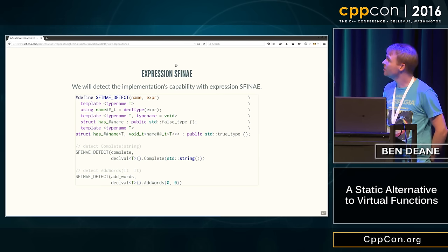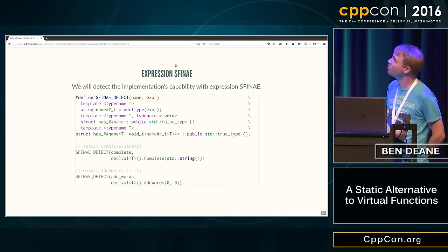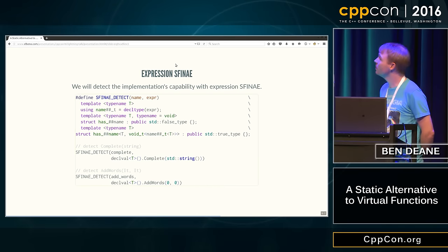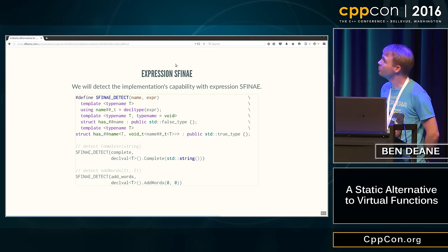So this is the void_t detection idiom, as popularized in a couple of talks. So basically, you can see we're doing SFINAE detect, and we're giving it a name, and then we're giving it the expression, which gets put into the decltype on line three of the macro there. And the upshot is that if our engine provides the, if this is a valid expression to call on our engine, then we end up deriving a thing from true_type, otherwise we end up deriving from false_type.